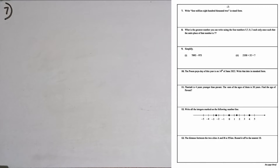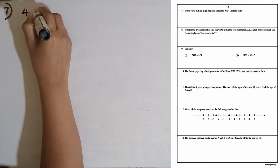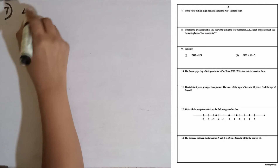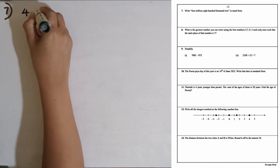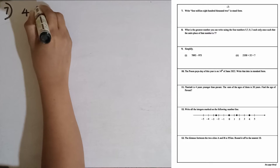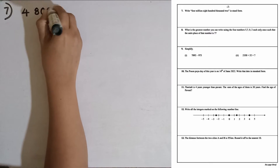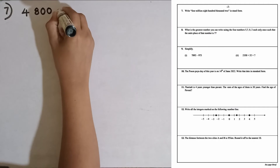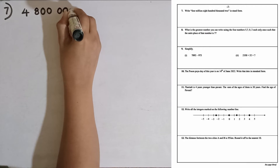Question number seven: write 4 million 800,002 in standard form. 4 million, then 800,000 — we have to keep a small gap between the number zones — so 800,000 is written as 8 then double zeros, then 2 in the units zone, also written with double zero 2.